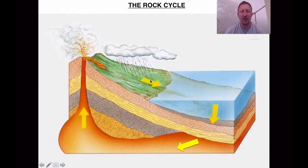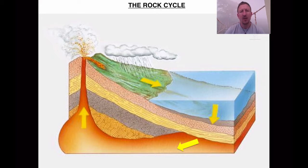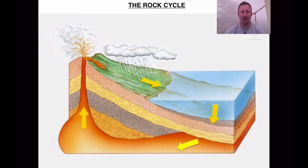Basically, the idea of the rock cycle is that everything on this planet does not remain in the same state all the time — it's going to change and move. You've got to realise that this is going to happen over millions and millions of years, but from the beginning of time all the rocks, all the minerals, all the compounds that made up the rocks were here at the beginning of time, and as a result they are still here but just coming in different shapes and forms.